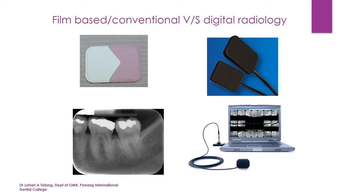When talking about conventional versus digital radiology, the primary difference is the image receptor — the film used to capture the image or a digital sensor which captures the image. The image looks very similar whether it's film-based or digital radiology, with almost similar clarity and resolution. In film-based imaging you hold the film in your hand, whereas in digital radiology you're looking at it on a computer screen. You still need x-rays to expose the film or sensor in order to capture the image.